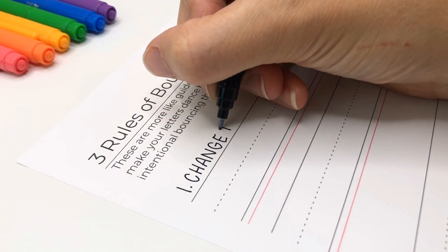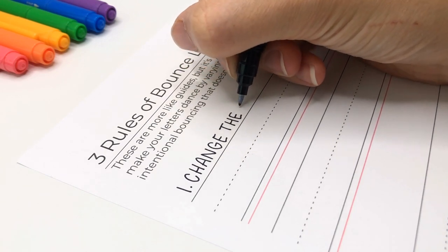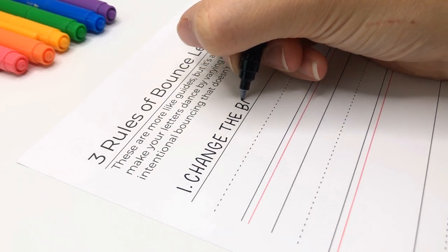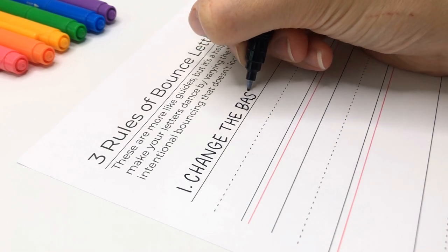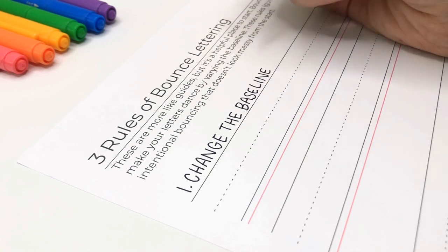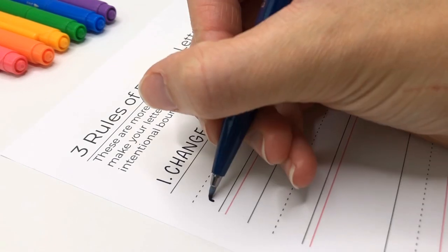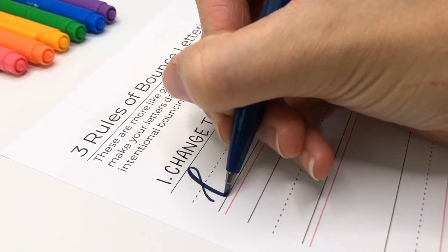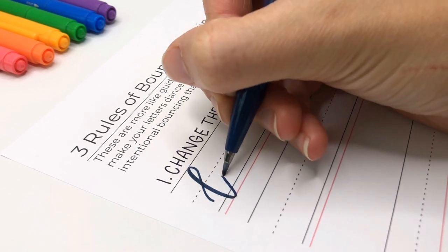Number one, changing the baseline. This is probably the one you know, right? To get bouncy lettering, you just change the baseline of some letters. But I get a lot of questions like, how do you know which letters to bounce? How far can you go down? The answer is tricky because it depends on the word and what letters are next to each other.